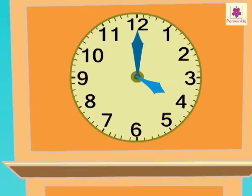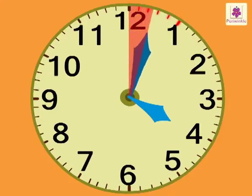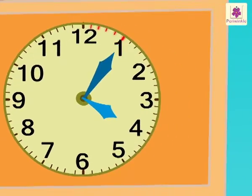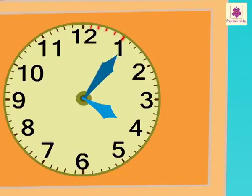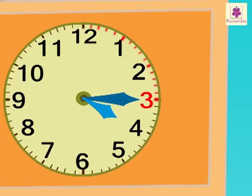Friends, look at the minute hand. It takes 5 minutes to move from one number to the next on the clock. When the minute hand is on 1, it means 5 minutes. When the minute hand is on 2, it means 10 minutes. When the minute hand is on 3, it means 15 minutes.